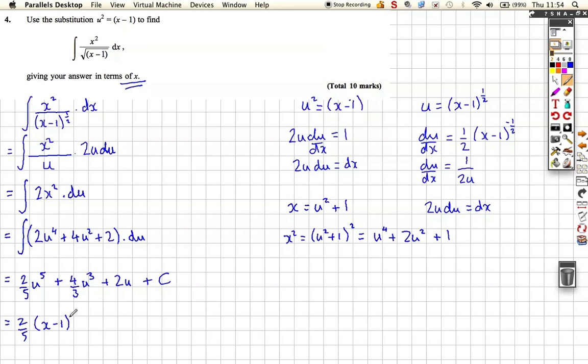So what do we get? It's 2 fifths, u is (x minus 1) to the five over two, plus 4 over 3 (x minus 1) to the, it's the power three so it's three over two, plus 2 (x minus 1) to the half, plus our constant of integration C.